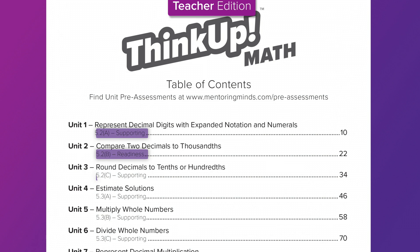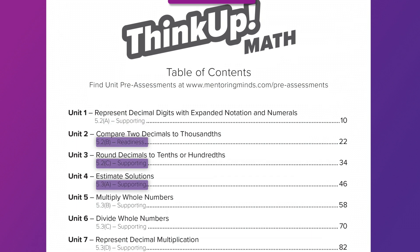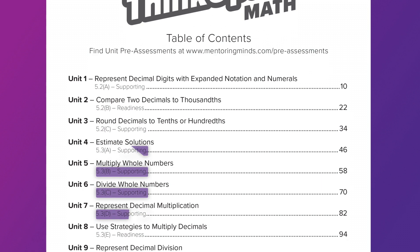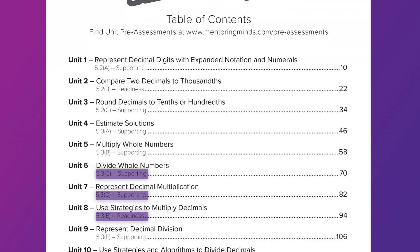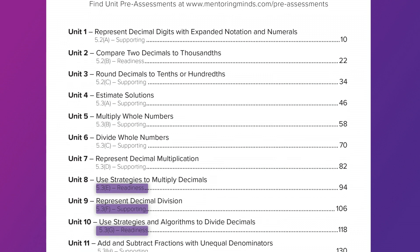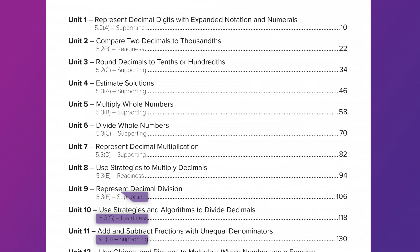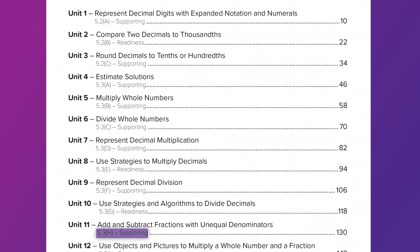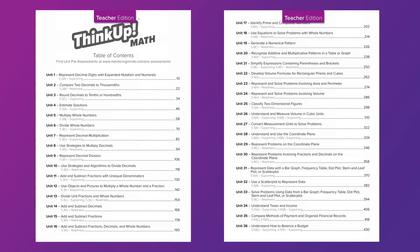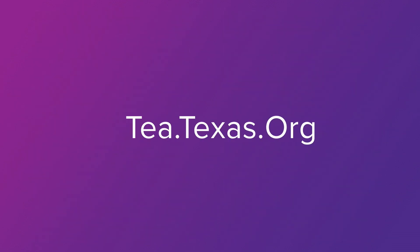In an effort to structure STAR assessments so that they are more focused, TEA has made a distinction between readiness and supporting standards for the TEKS content standards eligible for assessment. Based on feedback from Texas educators, a set of readiness standards has been identified for each subject in grade or course drawn from the TEKS content standards eligible for assessment. These readiness standards will be emphasized annually in the STAR assessments. The content standards deemed to be supporting are still an important part of instruction and are eligible for assessment; however, the supporting standards may not all be tested each year. This information and more can be found on the TEA website.